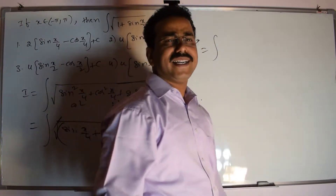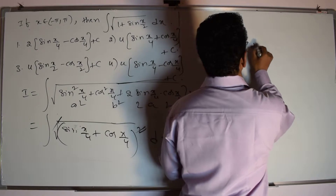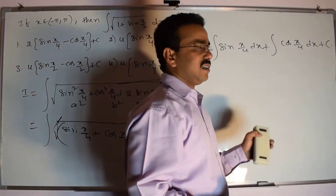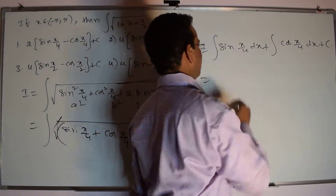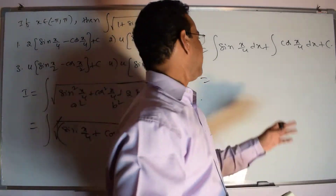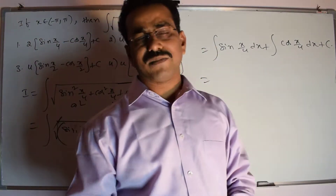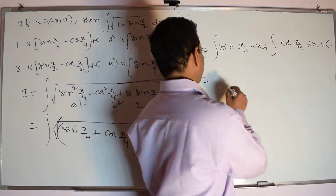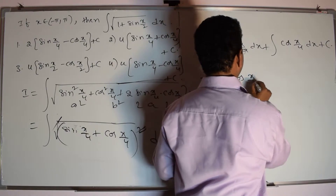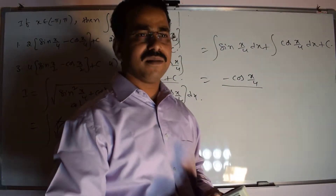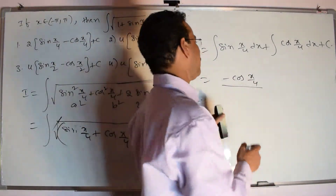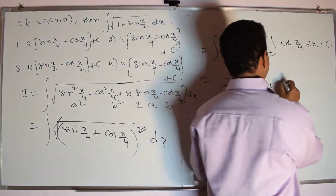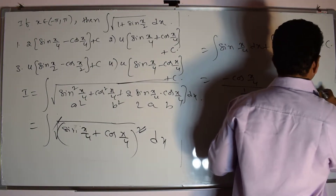This equals the integral of sin(x/4) dx plus the integral of cos(x/4) dx plus C, where C is the constant of integration. Using the standard formula: integral of sin(x) equals minus cos(x). Here x is replaced by x/4, so we get minus cos(x/4), divided by the derivative of x/4 by the chain rule. The derivative of x/4 is 1/4. Similarly, the integral of cos(x) is sin(x), so we get sin(x/4) divided by 1/4, plus C.